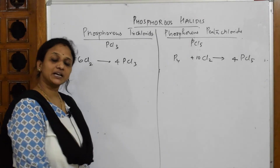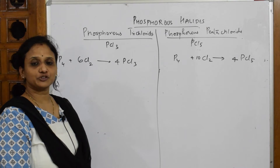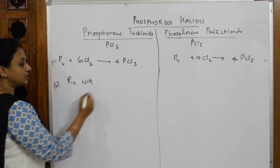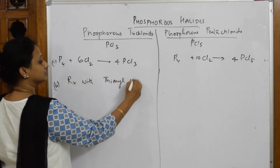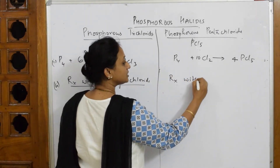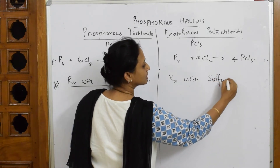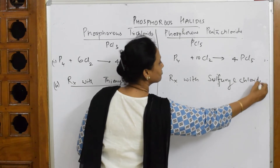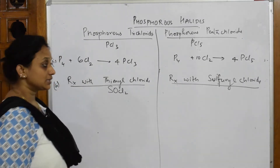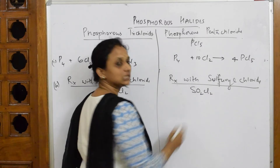Now let us look at more reactions for the preparation of phosphorus trichloride. This is called thionyl chloride. Now I'm going to show you one more reaction — this is called sulfuryl chloride. Don't get confused. Thionyl chloride formula is SOCl2; sulfuryl chloride formula is SO2Cl2. Please observe carefully — there is a difference.